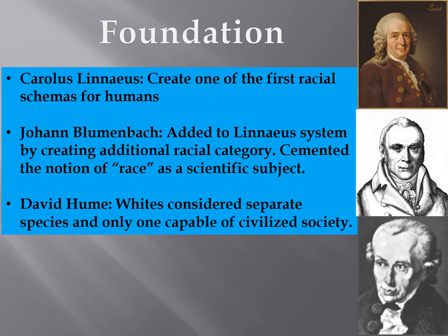Let's look at some prominent European figures. Carlos Linnaeus created one of the first racial classification systems for humans. Johann Blumenbach added to Linnaeus's system by creating additional racial categories and cemented the notion of race as a scientific subject. David Hume argued that whites were a separate species and only one capable of civilized society — discounting colonialism and other factors, and ignoring the wide degree of complex civilizations seen in Africa, Asia, and South America.